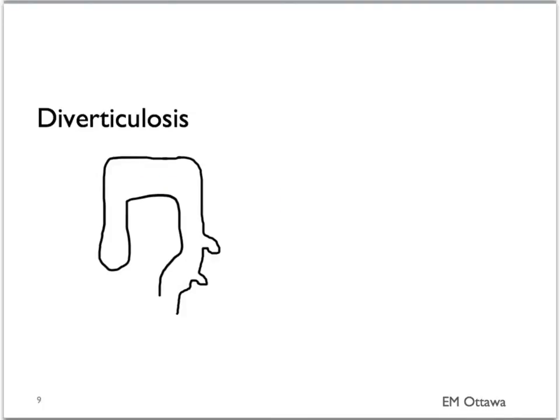For diverticulosis, diverticular bleed can be brisk. Sometimes an embolization can be done by interventional radiology to knock out the blood supply to that particular part of the bowel. If it does not settle down, surgery might be needed to resect the part of the colon with the bleeding diverticulum.